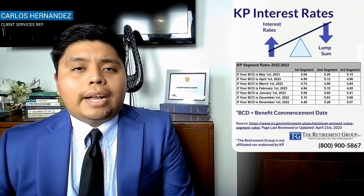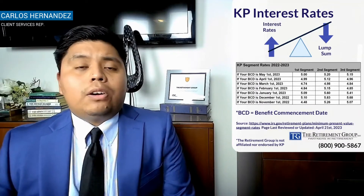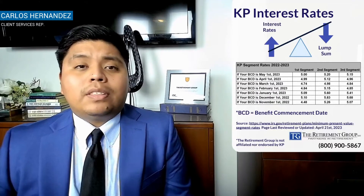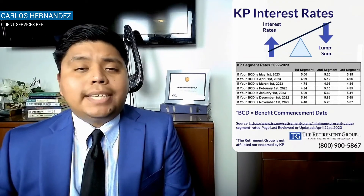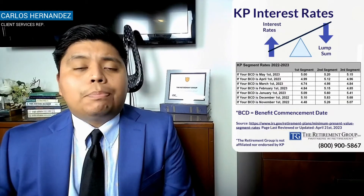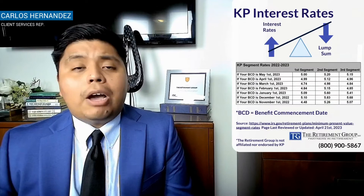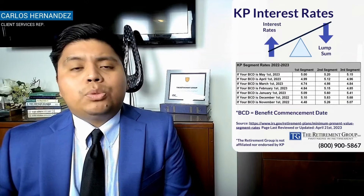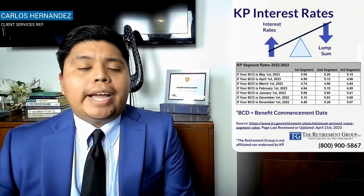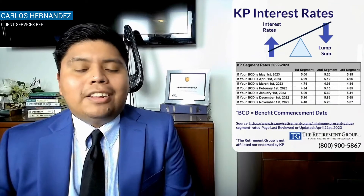Something unique to Kaiser is the way they use these rates in your pension calculation — they use a two-month lookback. For those retiring this month, the month of May, the rates used for your lump sum calculation would be March's interest rates. For those retiring next month in June, the applicable rates would be April's interest rates, which have not come out yet. We expect them to be published by the IRS more towards mid-May, so tune in because we'll be doing another segment on that.